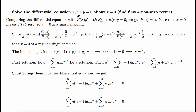Solve the differential equation xy'' + y = 0 about x = 0. We need to find the first four non-zero terms. First, let's compare this equation with the standard equation. We get that P(x) = x, and x = 0 makes P(x) equal to 0, which means x = 0 is a singular point.